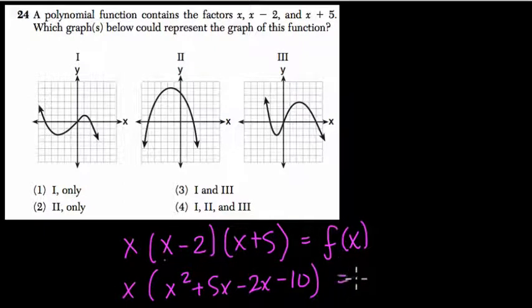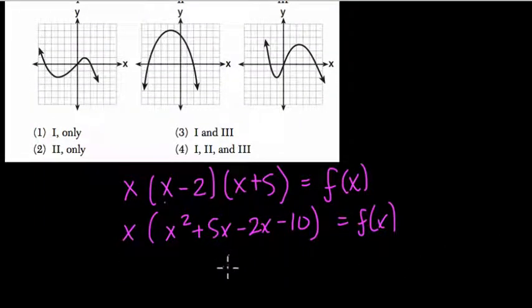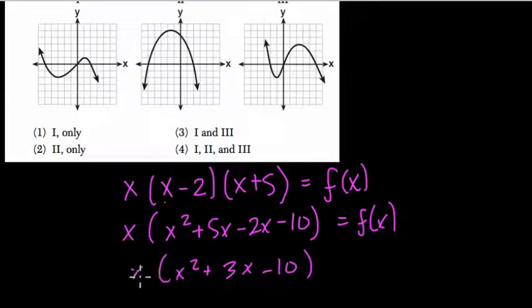So this is our function. All right, so then we simplify. The 5x and 2x is 3x. So x squared plus 3x minus 10 times x equals f of x.